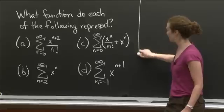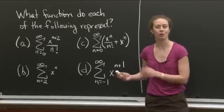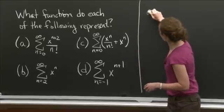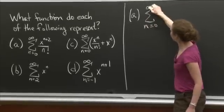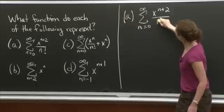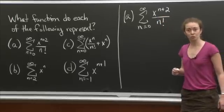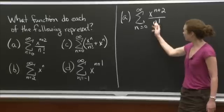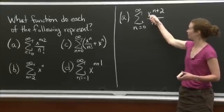I'm just going to go straight through a, b, c, and d. And I'm going to rewrite the problem each time, because I don't want to keep coming back. So a, we had the sum n equals 0 to infinity, x to the n plus 2 over n factorial. Well, this looks very close to something we know. It looks a lot like the function e to the x. The difference is that e to the x just has a power x to the n.